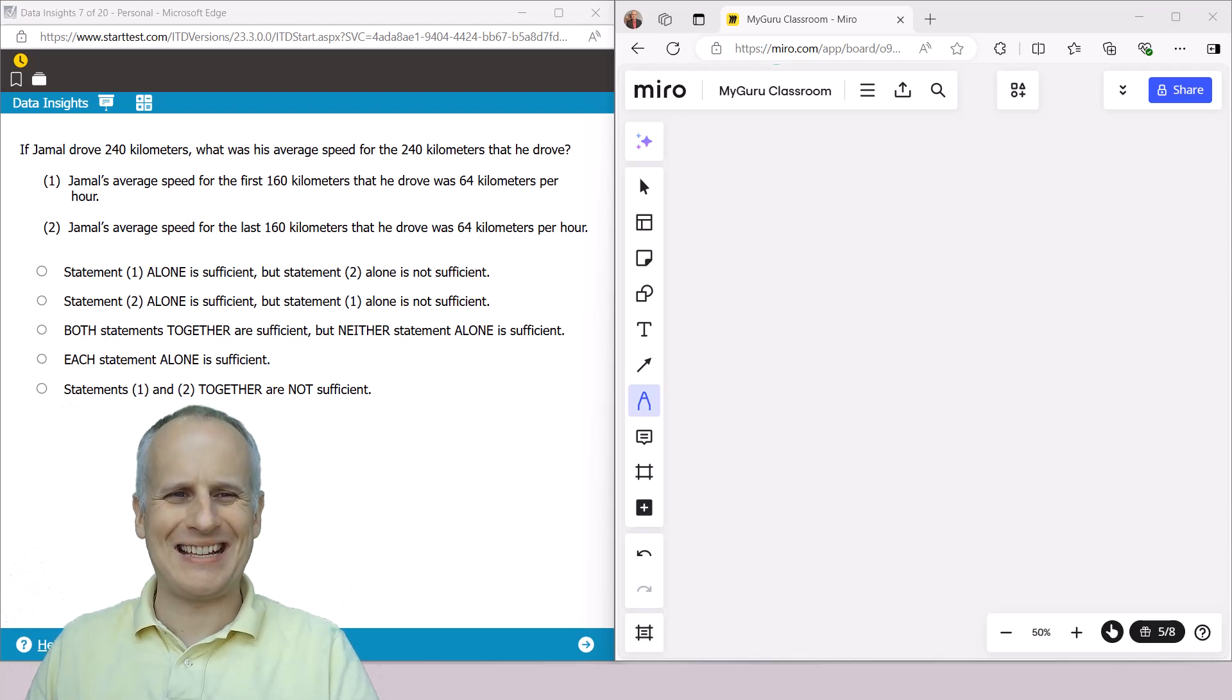Here we have a sample data insights data sufficiency question format on the GMAT Focus from an official practice exam over at MBA.com. The way that you engage with a data sufficiency is you always begin by just writing a little K for what we know. You want to articulate that information as mathematically as possible without engaging the individual conditions to start. So we begin: if Jamal drove 240 kilometers, we know that D for distance is equal to 240 km.